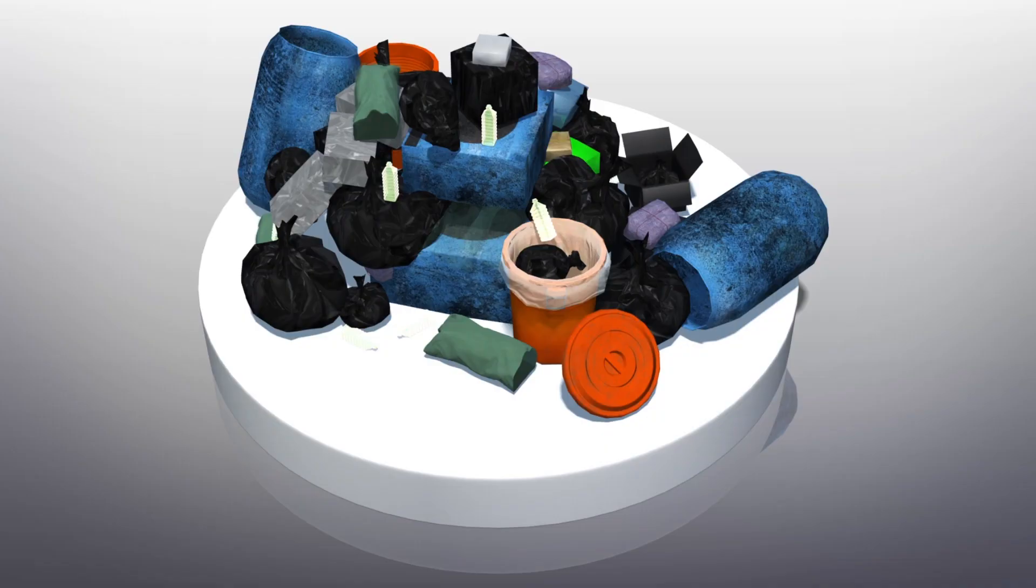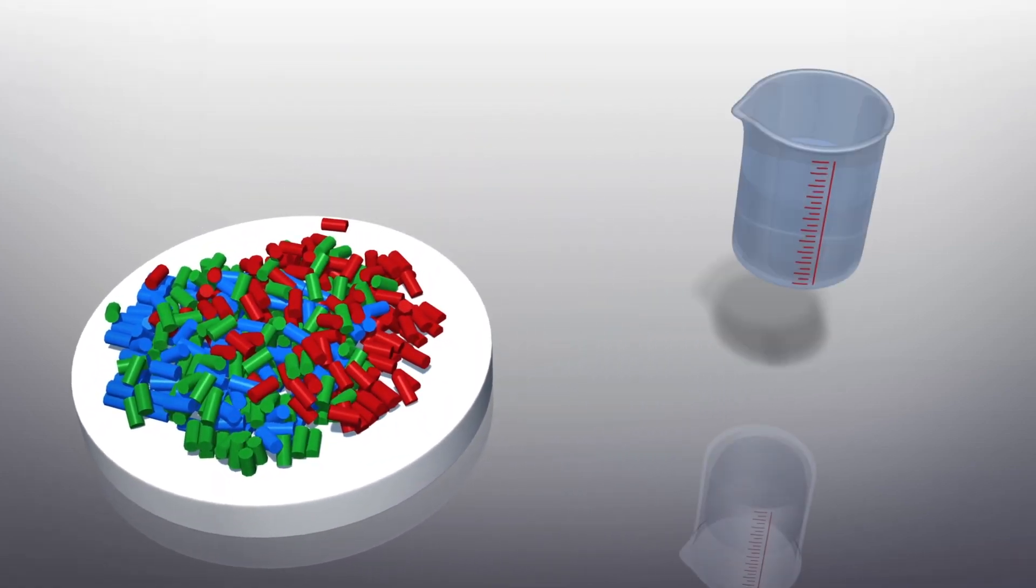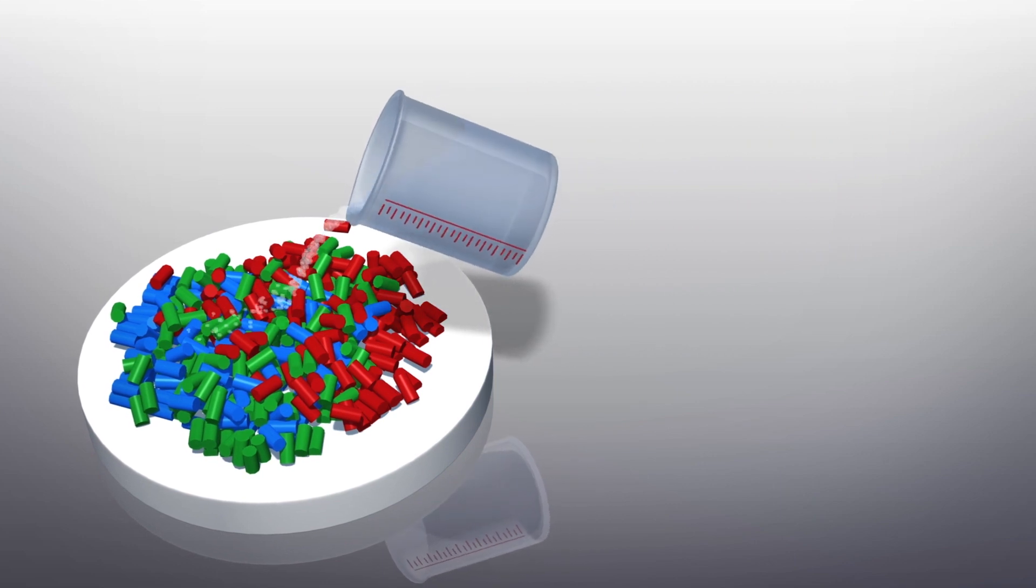MacReber has patented a process in which plastic waste is turned into granules and then mixed with a special activator that allows the granules to bind together.